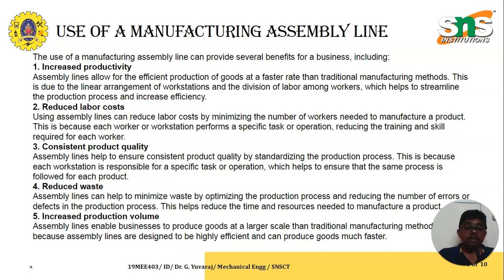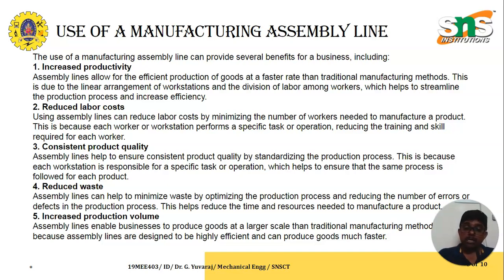Consistent product quality achieves uniform standards in product manufacturing. Assembly lines also help in reducing waste by optimizing the production process and reducing the number of errors or defects, which reduces the time and resources needed. Furthermore, assembly lines increase production volume by enabling businesses to produce goods at a larger scale, as they are designed to be highly efficient due to the linear arrangement of workstations and the division of labor among workers.